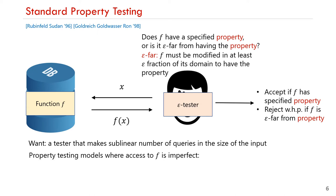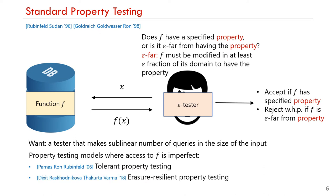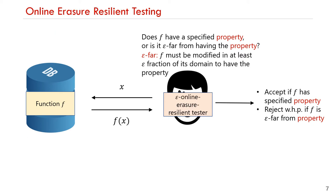Other property testing models have been studied where this assumption does not hold. Parnas, Ron, and Rubinfeld-Sudan initiated the study of tolerant property testing, where a fraction of the values of f could be corrupted. Dixit, Schibler, Harms, Khot, Kutty, and Varma studied erasure-resilient property testing, where a fraction of the values of f have been erased before the algorithm makes any queries — we refer to this as the model of offline erasures. We study property testing when erasures to f happen online, as the algorithm is making its queries. The goal of an epsilon online erasure-resilient tester is the same as that of a standard tester: it should accept if the function has the specified property and reject with high probability if it is epsilon-far, with access via the online adversarial oracle.